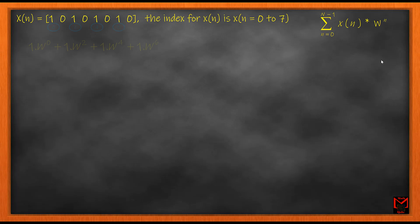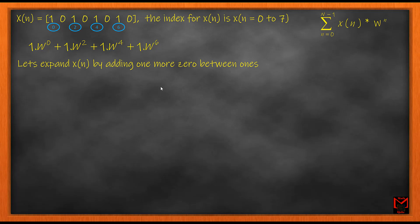With the modified Fourier transform representation, the index of x(n) from 0 to 7 becomes clear. Looking at the signal, the position of the first one is at index 0, the second one is at index 2, then 4, and so on. Using these indices — 0, 2, 4, 6 — my Fourier transform writes itself as: 1·W⁰ + 1·W² + 1·W⁴ + 1·W⁶, where the ones represent the signal values and 0, 2, 4, 6 represent their indices.